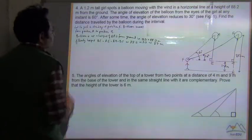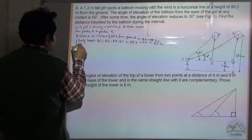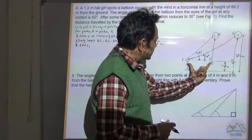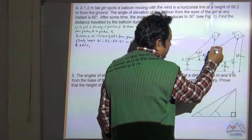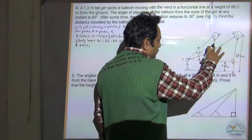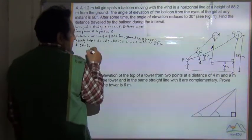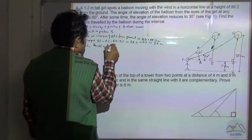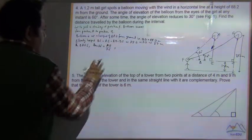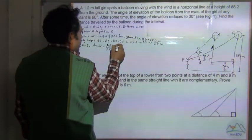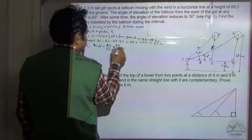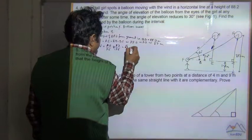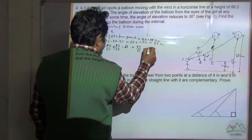Now consider triangle AFE. In triangle AFE, tan 60° = AE / FE. AE we have calculated is 87, divided by FE. Tan 60° equals √3. So 87 divided by √3 equals FE. Multiplying numerator and denominator by √3, this becomes 87√3 divided by 3, which equals 29√3. So FE = 29√3.